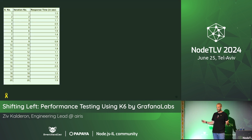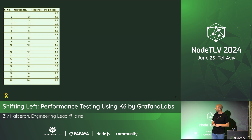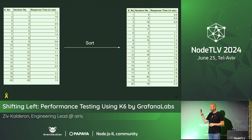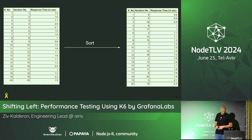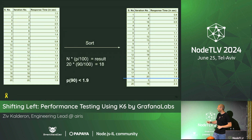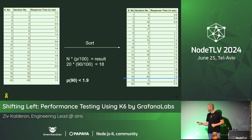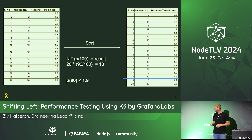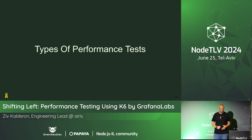Let's say I have a spreadsheet and I'm sending 20 requests to my server, documenting each response time. I sort the table from lowest to highest response time. To find the 90th percentile, I take N (which is 20), multiply by 0.9, and get row number 18. So in this case, p90 is lower than one second.